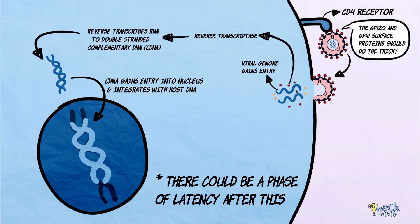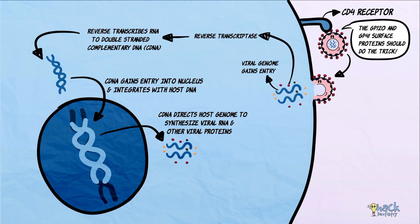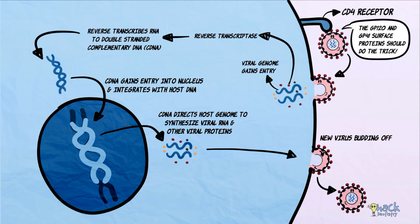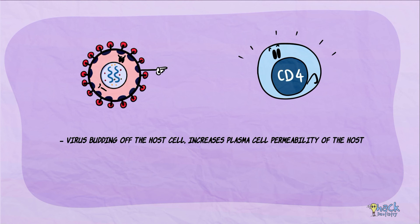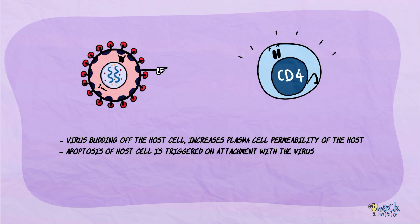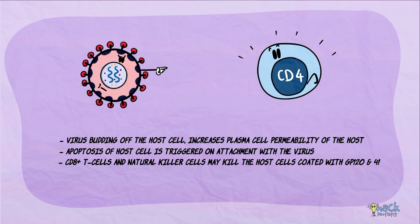Alternatively, the viral genome integrated with the host genome directs it to form viral RNA and other viral proteins. The viral core proteins formed bud off from the host cell membrane, forming new virus. The host cell dies because when the virus buds off, it increases plasma membrane permeability, thereby killing the cell. Apoptosis of the host cell is also triggered on attachment of the virus. Additionally, cytotoxic CD8+ T cells and natural killer cells may cause death of those CD4+ T cells coated with the viral glycoproteins GP120 and GP41.